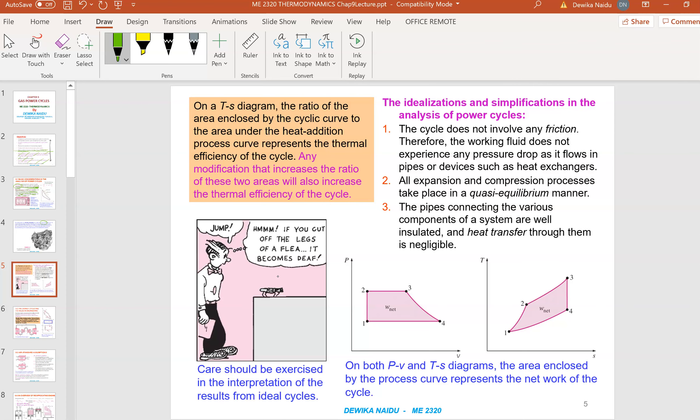The idealization that you need to take or the simplification that you need to do in a power cycle. Without these three points, it's very difficult for us to study on the cycle. The first point would be the cycle does not involve any friction. Therefore, the working fluid does not experience any pressure drop as it flows in the pipes, devices such as heat exchangers. Whenever a liquid is actually flowing in a bend or in a pipeline, there is a pressure drop, there is a heat loss. In this case, we are going to ignore all that.